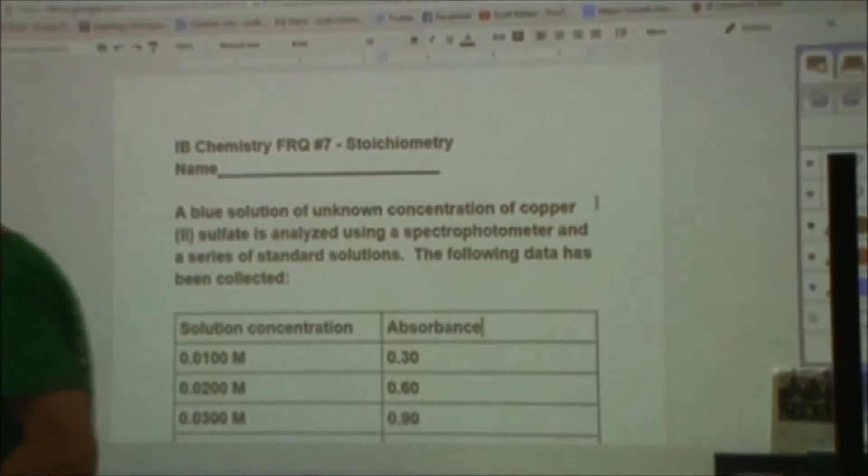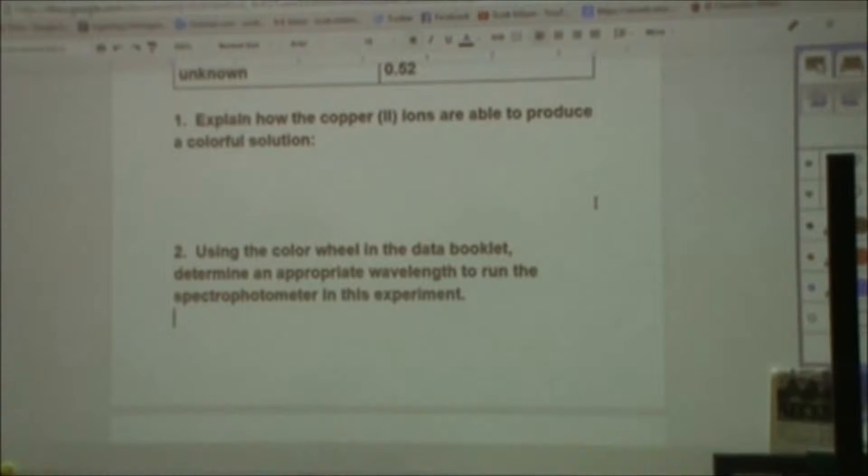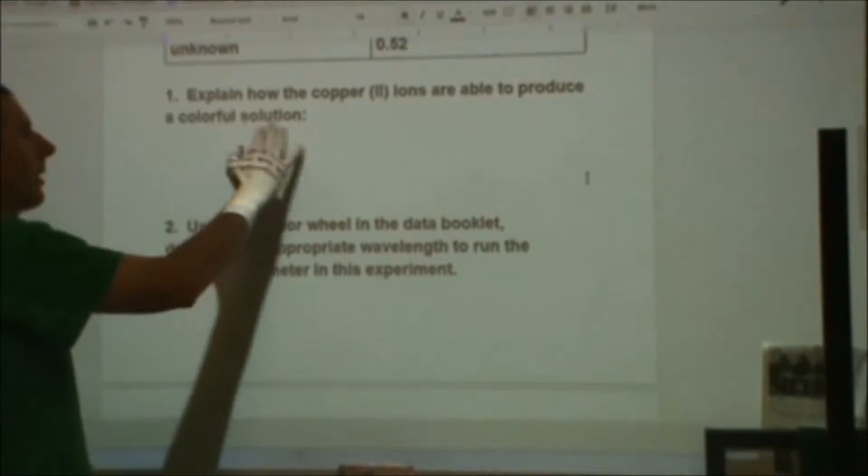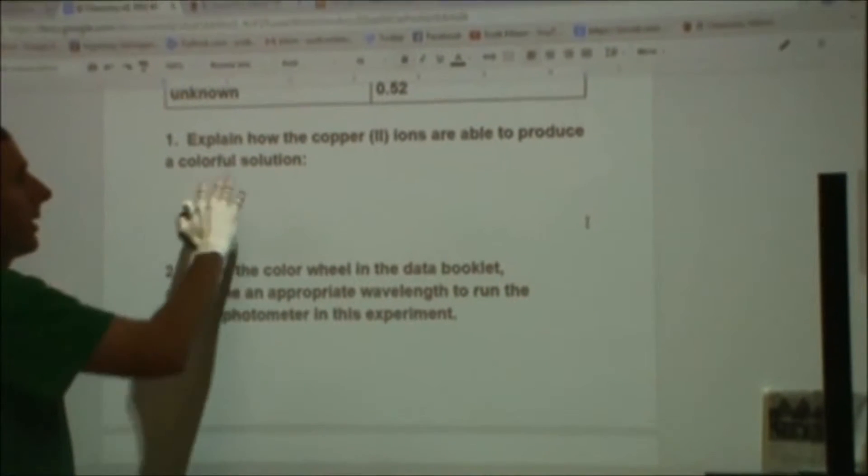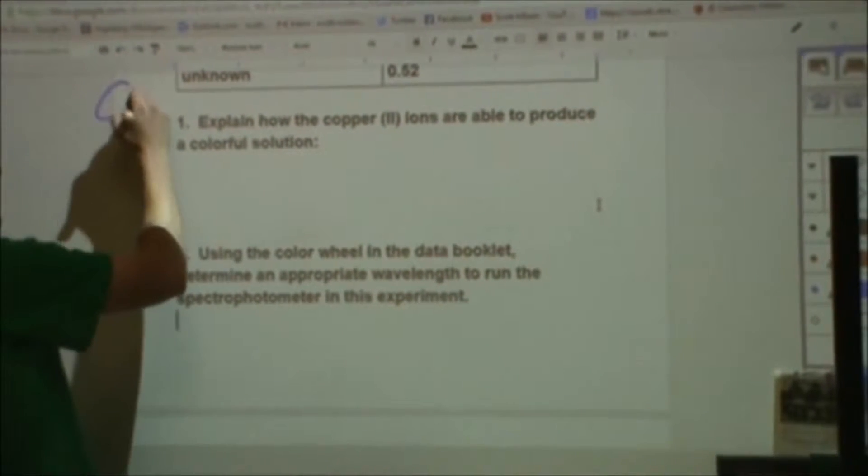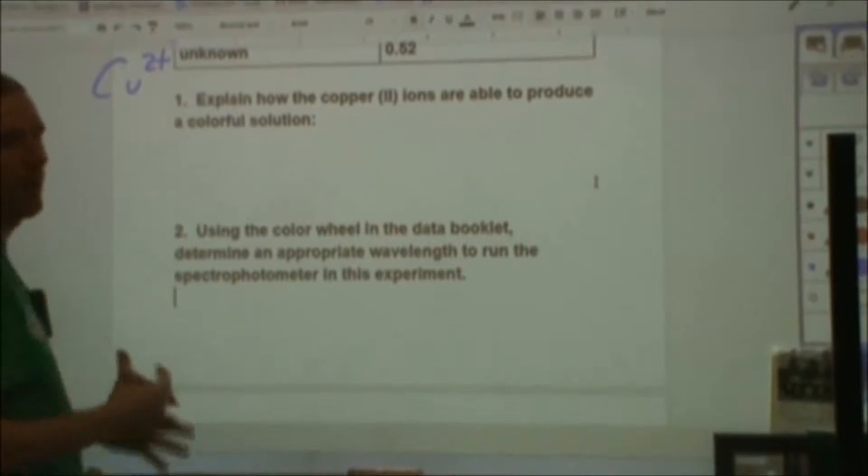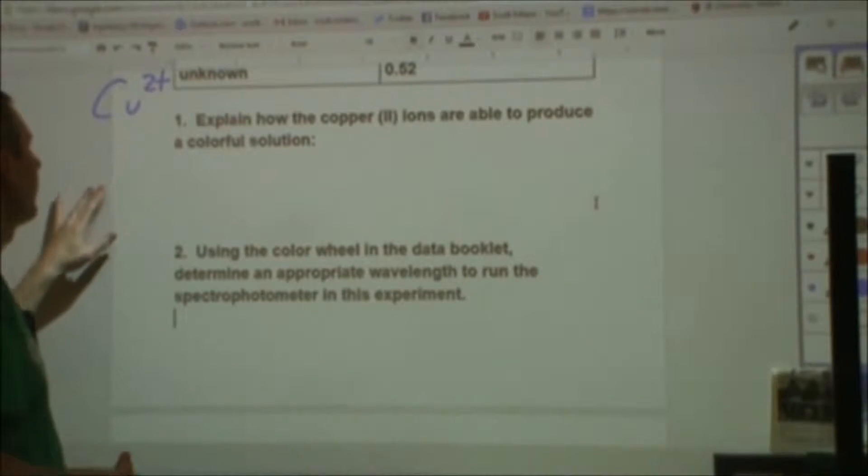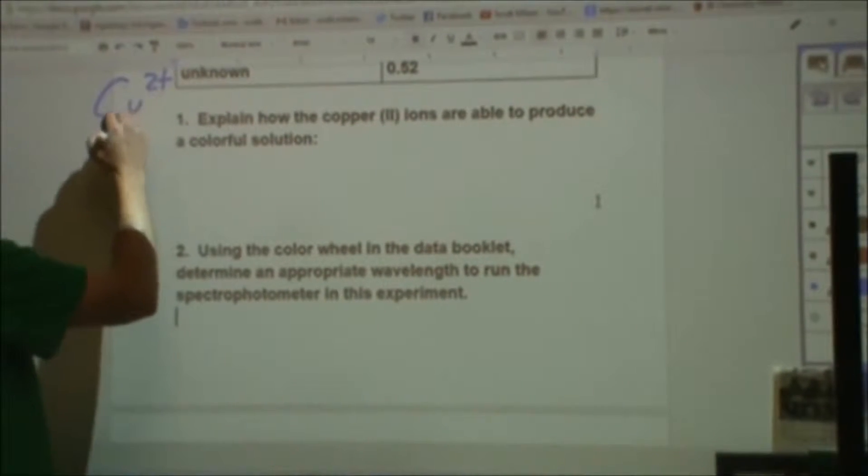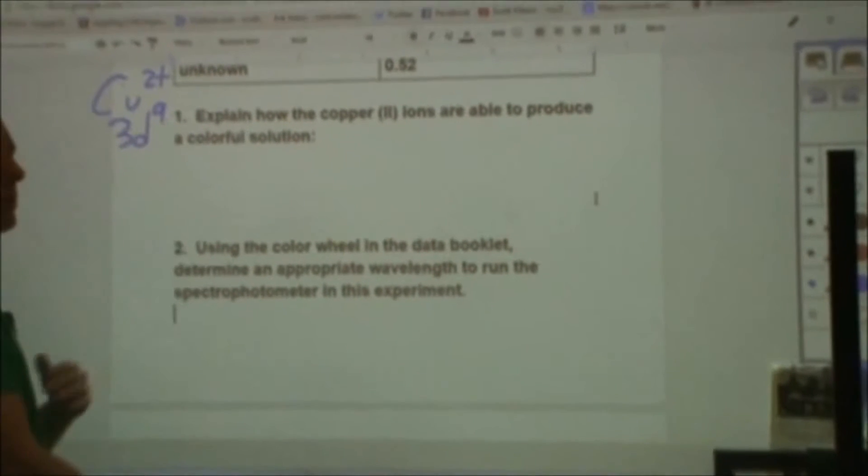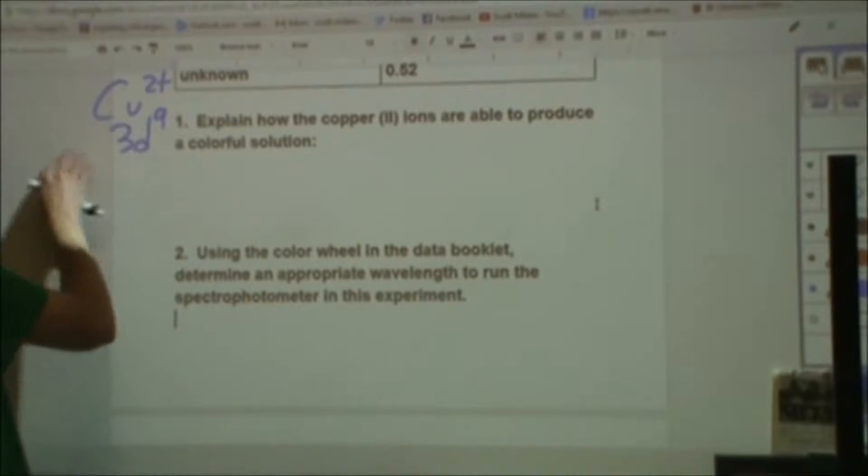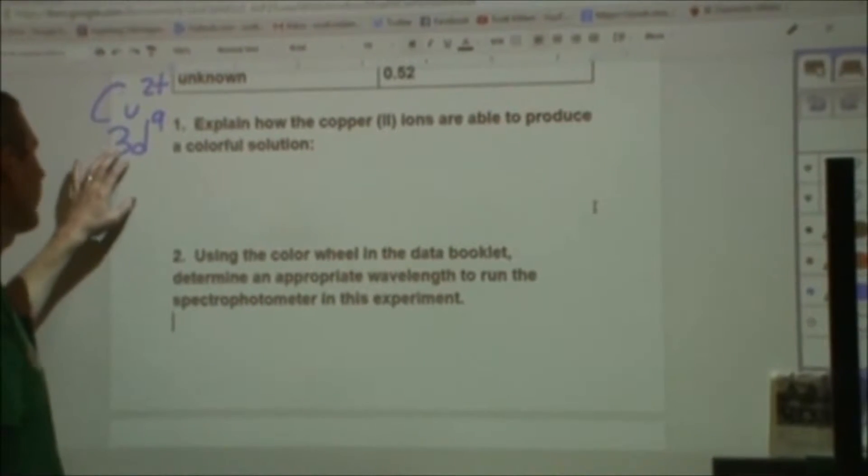Before we get into that, we start off with some background on complex ions and color. It says explain how the copper(II) ions are able to produce a colorful solution. Copper metal has 4s2 3d9, or 4s1 3d10 is a little more accurate for its electron configuration. The electron configuration for this after it's had the 4s electron removed and one of the d electrons is 3d9.